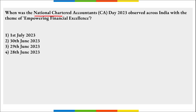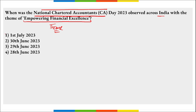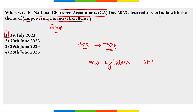When was National Chartered Accountant Day observed across India? National CA Day was observed on 1st July 2023 with the theme 'Empowering Financial Excellence.' It marked the 75th anniversary, and President of India Draupadi Murmu attended the CA Foundation Day, also launching a new syllabus at the Srifort Auditorium in New Delhi, in line with the National Education Policy 2020.